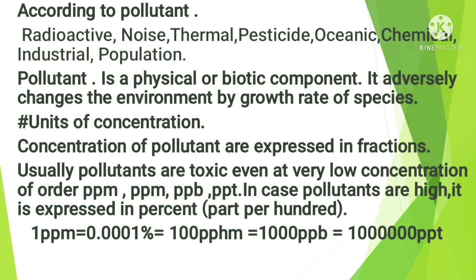The next topic is units of concentration. Concentrations of pollutants are conventionally expressed as fractions, since pollutants are toxic even at very low concentrations — for example, in parts per million (ppm), parts per billion (ppb), parts per trillion (ppt), or parts per hundred million (pphm). When concentration of a pollutant is high, it is expressed in percent, that is, parts per 100. One ppm equals 0.0001%, which equals 100 pphm, 1000 ppb, and 10 lakh (1,000,000) ppt.